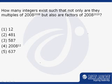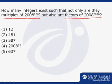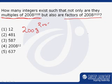How many integers exist such that not only are they multiples of 2008 raised to power 2008, but also are a factor of 2008 raised to power 2020? Any number which is a multiple of 2008 raised to power 2008 is in the form of 2008 raised to power 2008 into x.